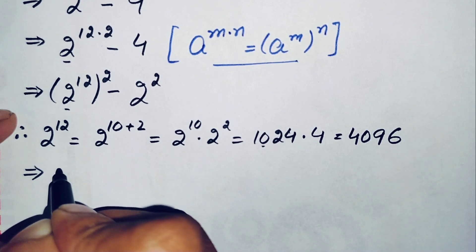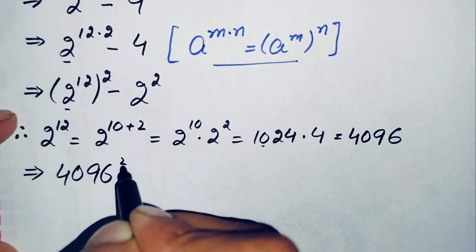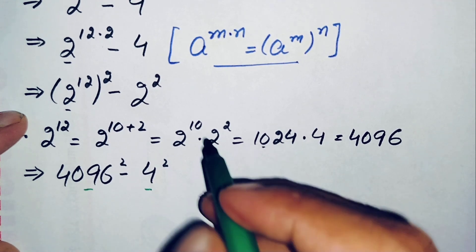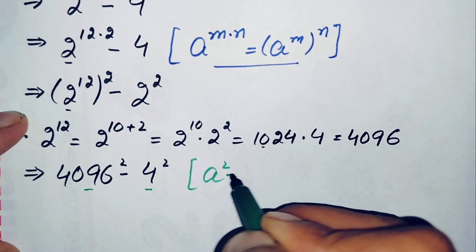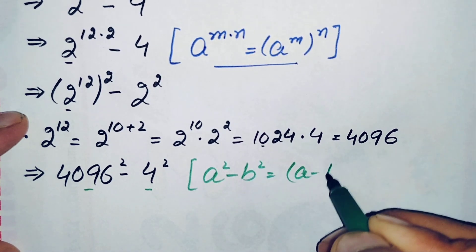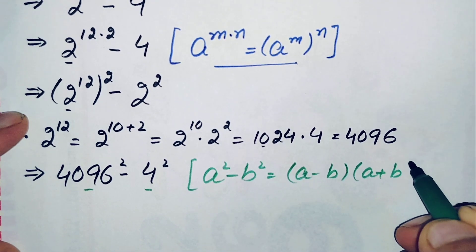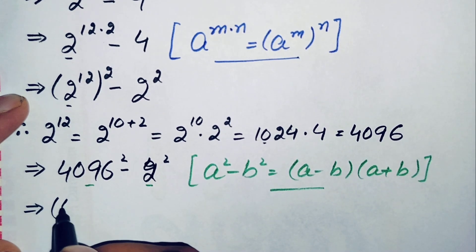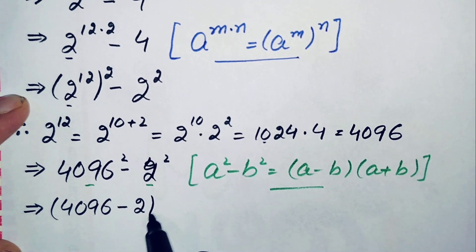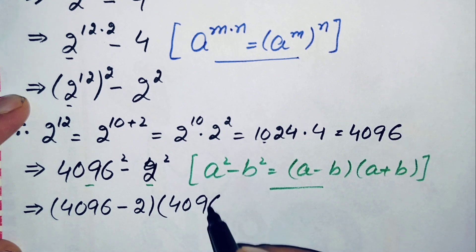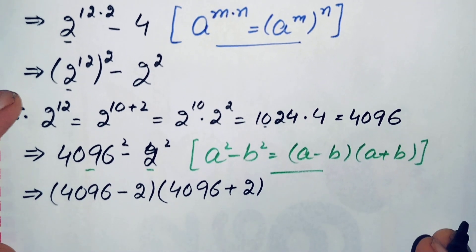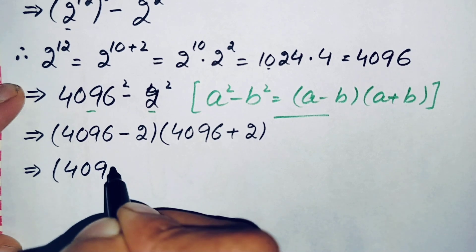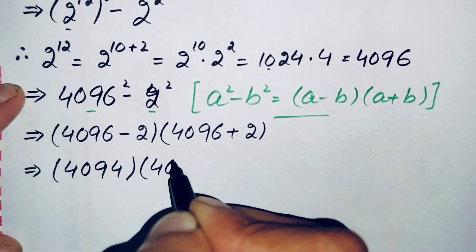We replace 2 raised to power 12 with 4096, so the expression becomes 4096 squared minus 4 squared. Now we apply the algebraic identity a squared minus b squared equals (a minus b)(a plus b). Using this identity with a = 4096 and b = 2, we get (4096 minus 2) times (4096 plus 2), which gives 4094 times 4098.